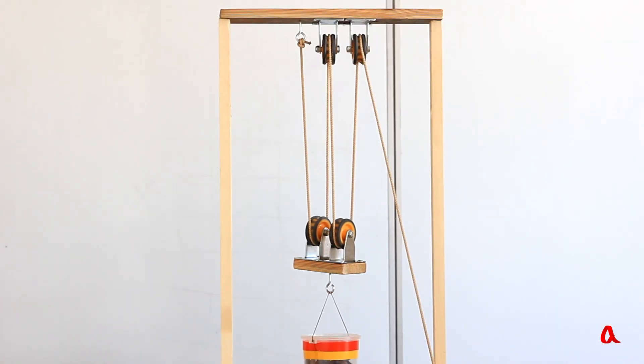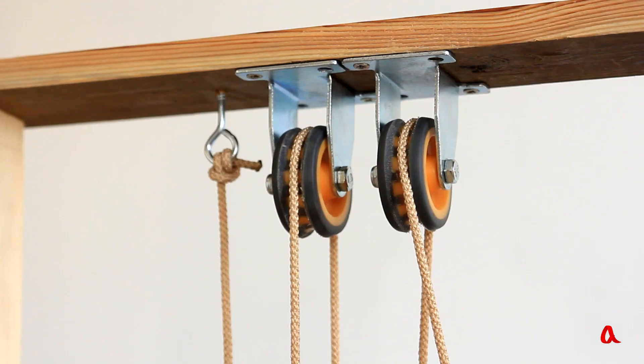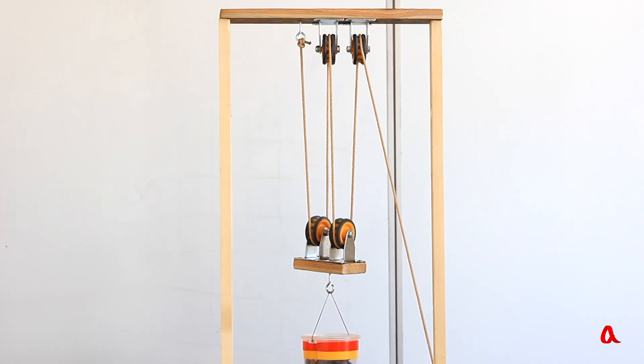Here is another variation of block and tackle construction. It consists of two movable and two fixed blocks, which are paired up. The rope is threaded through the movable and the fixed blocks in turn, and when we pull at it, the movable ones go up simultaneously.